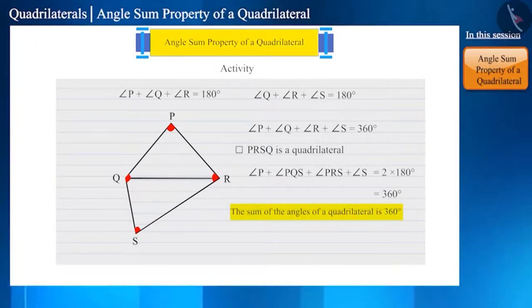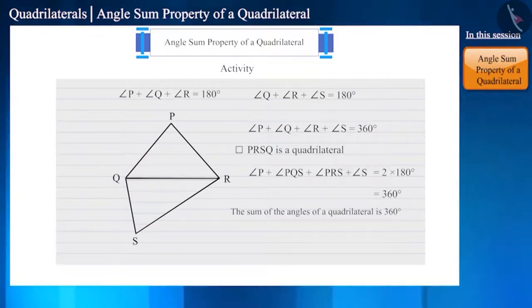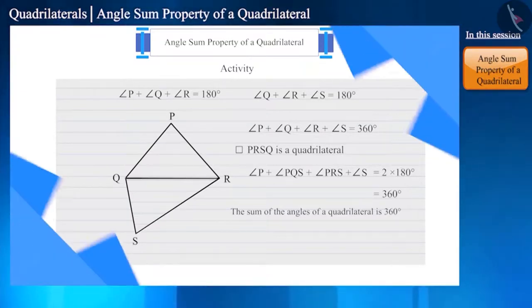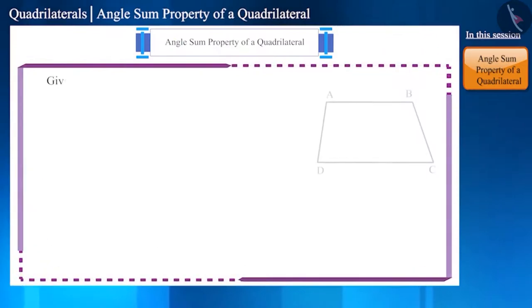We tested this property through an activity. Let us now try to prove it mathematically. Let's make a quadrilateral ABCD. We have to prove that angle A plus angle B plus angle C plus angle D is equal to 360 degrees.